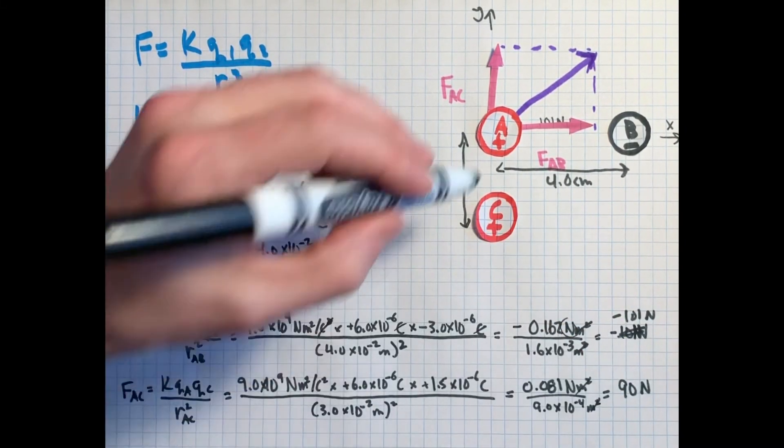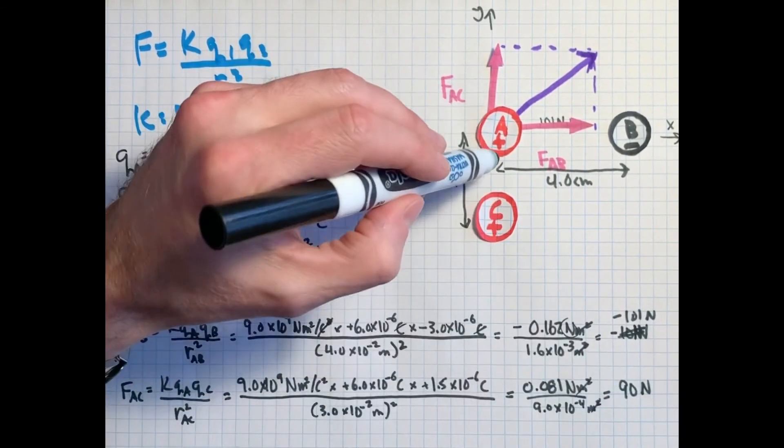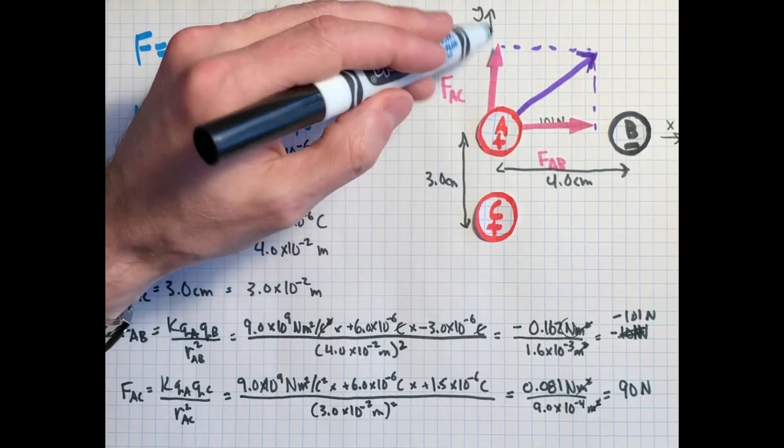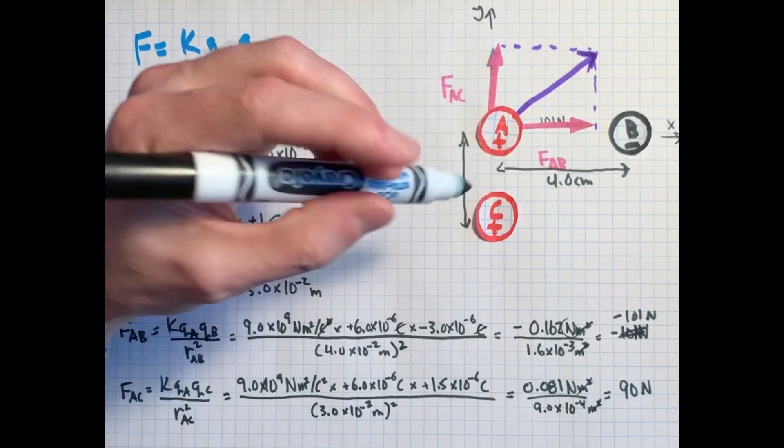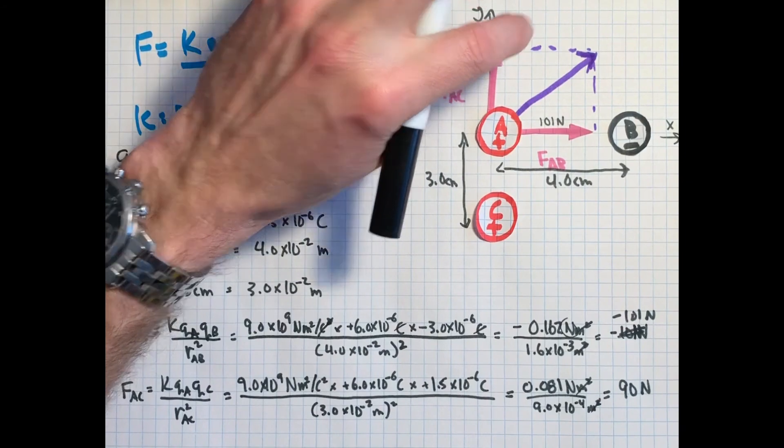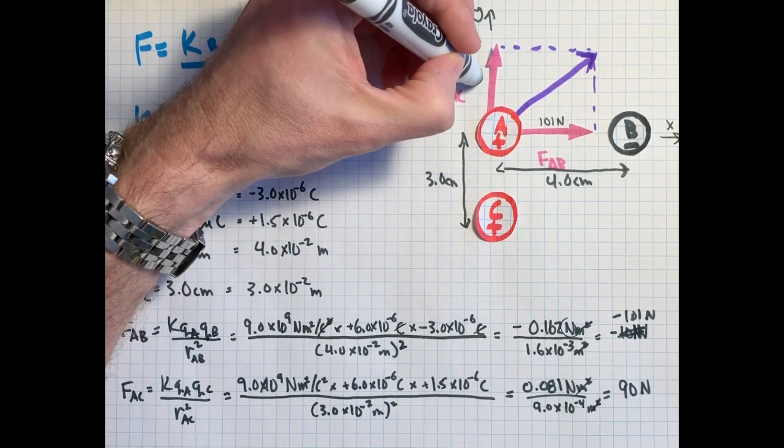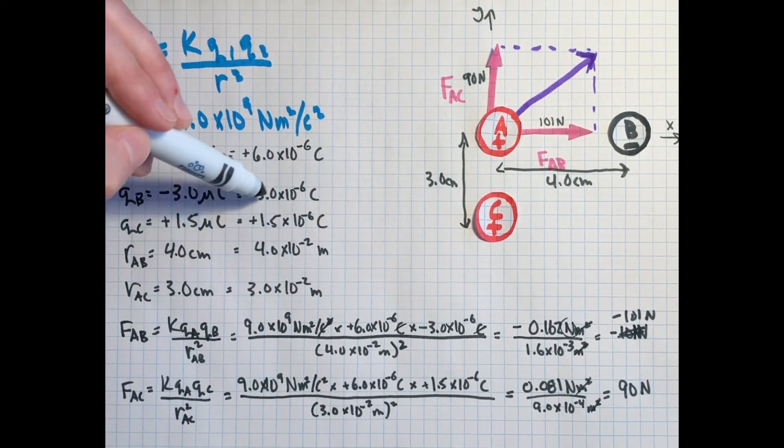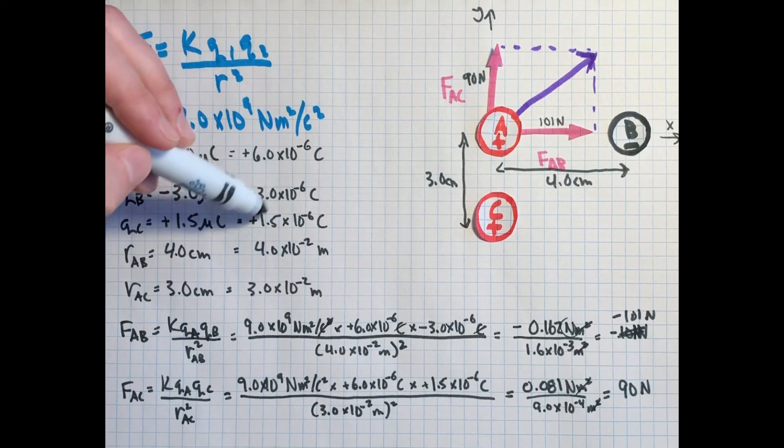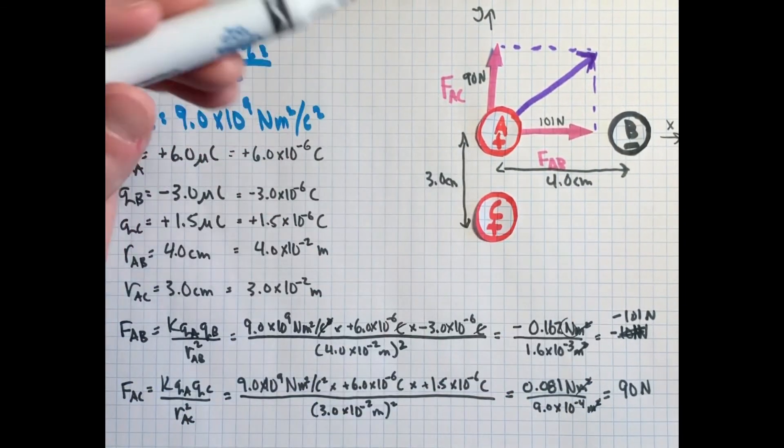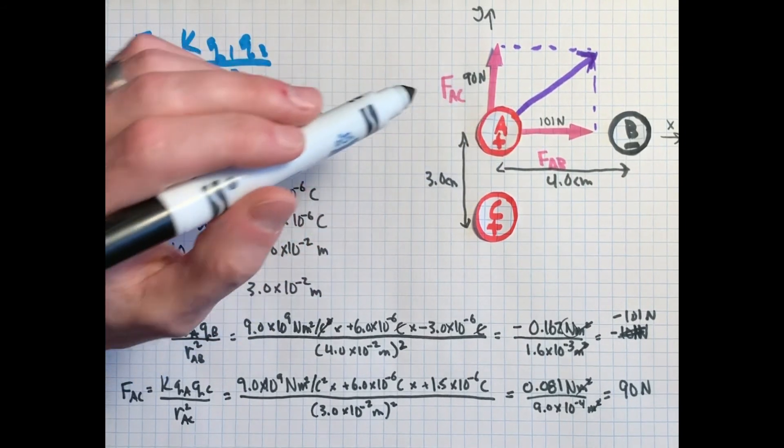So those were pretty close in terms of their size. Positive again means that they're pushing away from each other, and we know from our diagram that that means it's going to go that way. So now we know this number as well. It is 90 newtons in the direction of the arrow. So those were pretty close. And again, note that even though the charge on C was quite a bit less, it was half of the size of B, because it's just that little bit closer, the forces turned out to be not so different after all. So my arrows aren't too bad.